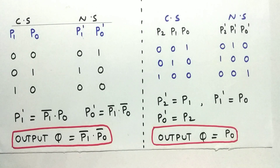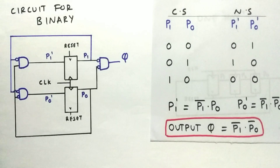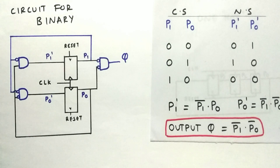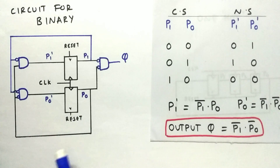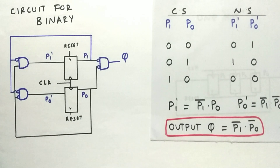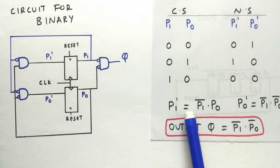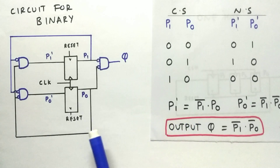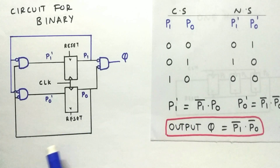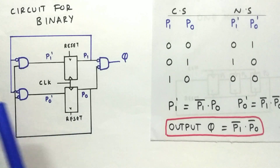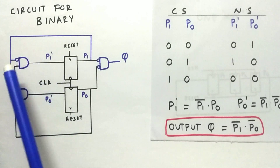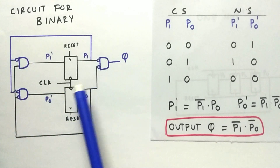Now we have our equations — let's make the design. Based on the equations for the binary encoded scheme, the circuit will look as shown. We got the equations and from them we got our circuit. This circuit is a simple one — we need a few AND gates with inverters to build it.